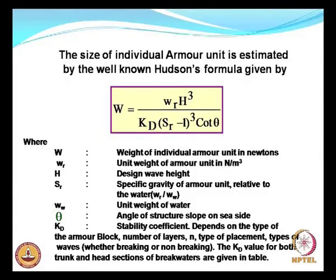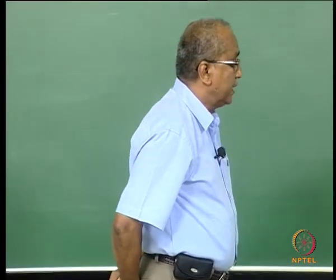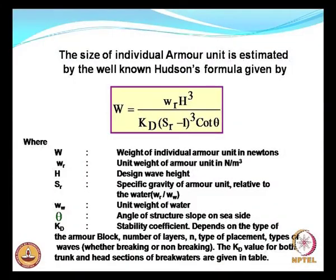K_D is the stability coefficient, which depends on the type of armour block, the number of layers N, the type of placement — whether random or in a regular fashion — the type of waves, whether breaking or non-breaking. The K_D value for both the trunk and head sections of the breakwater are quite different and are provided in the table in the next slide.